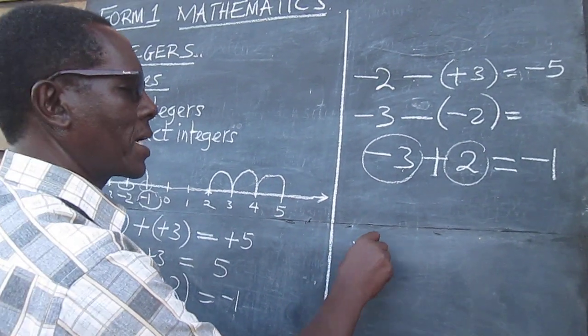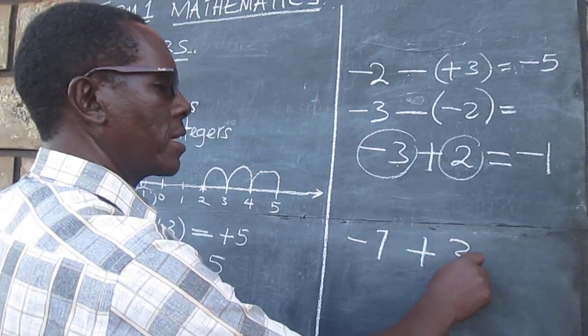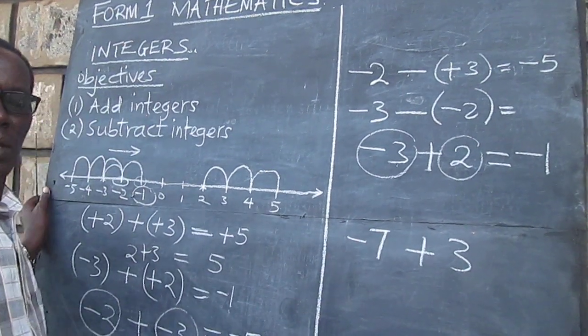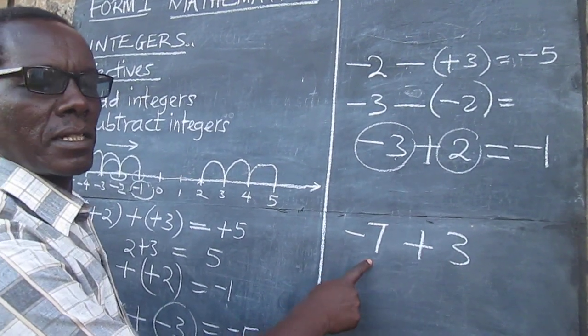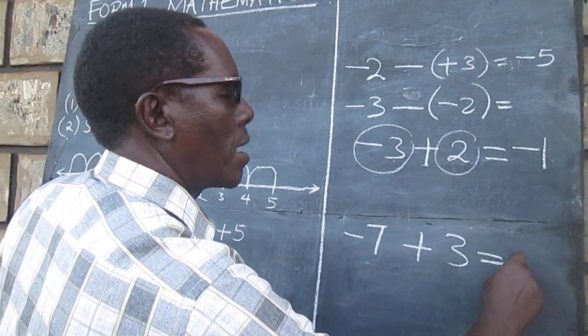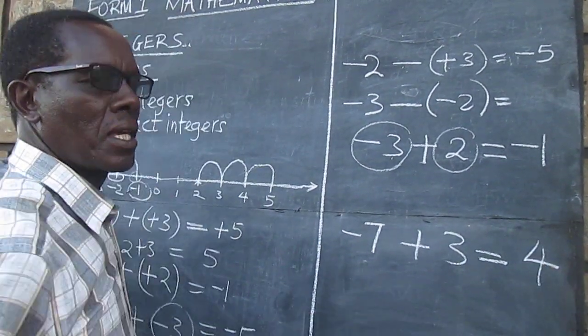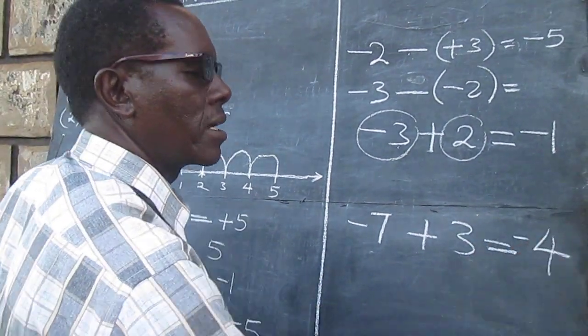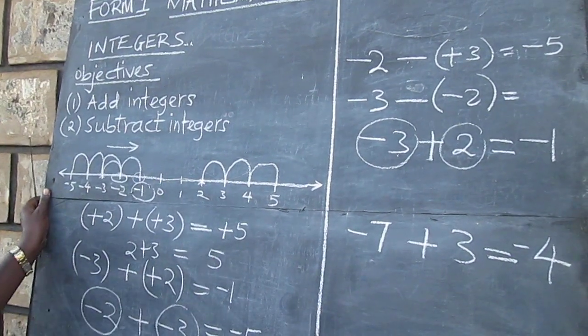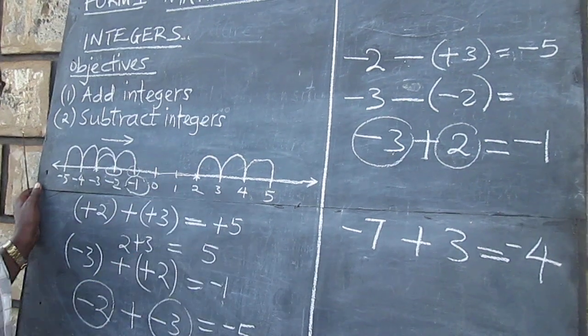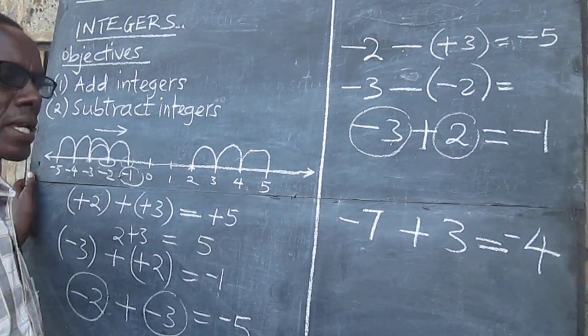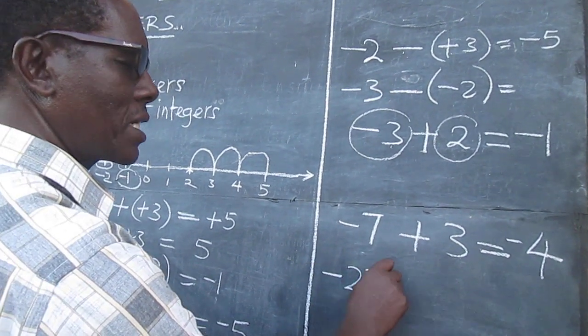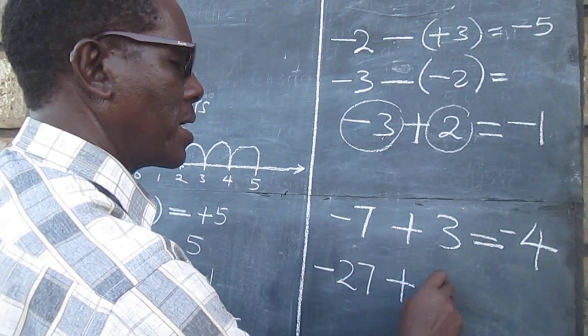For example, minus 7 plus 3. Here, we would only need to say 7, subtract 3, which gives us 4, and then assign the sign of the larger number. So, we do not necessarily have to use a number line all the time, even if the numbers were bigger. Negative 27 plus 8.